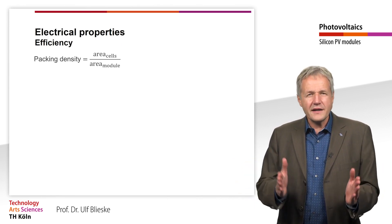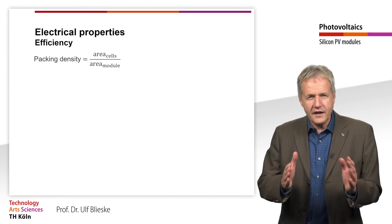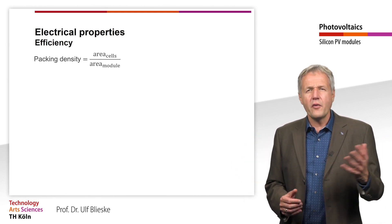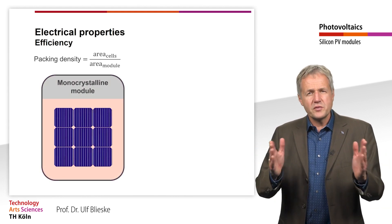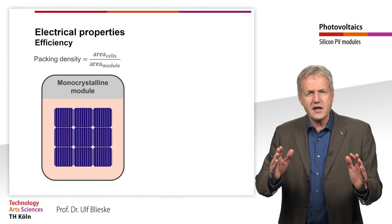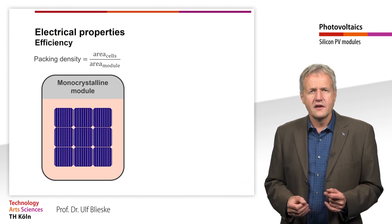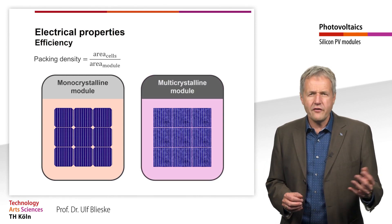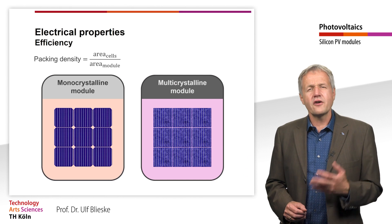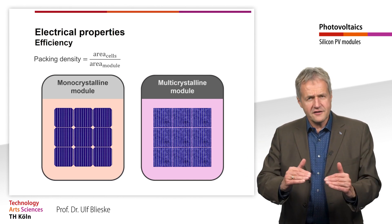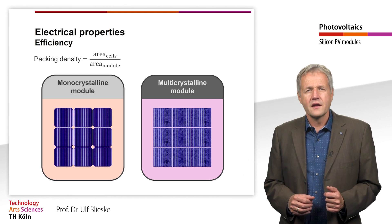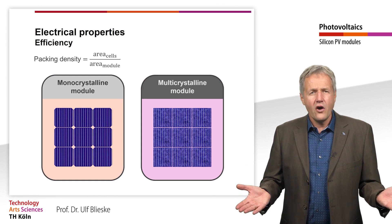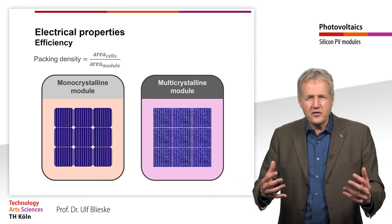We can define the packing density as the sum of the area of all cells in the module divided by the module area. In the case of a monocrystalline silicon module, there are gaps between the solar cells due to the pseudo-square shape of the wafers. The area of multicrystalline silicon cells can better be utilized. However, as we have seen in the first lesson, these cells have a lower efficiency than monocrystalline solar cells.